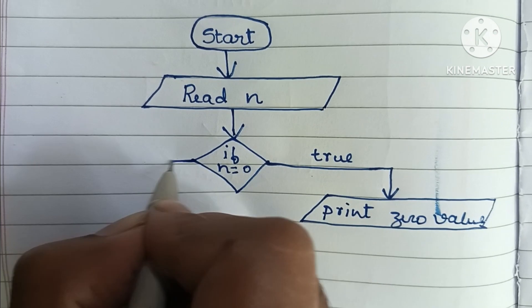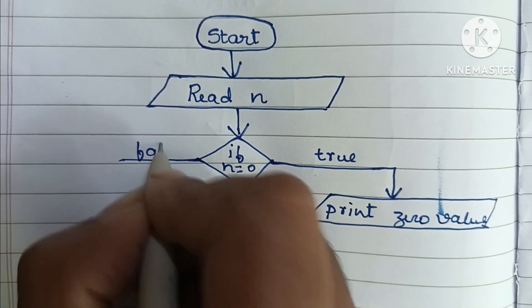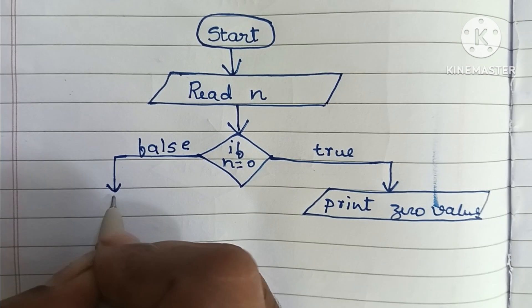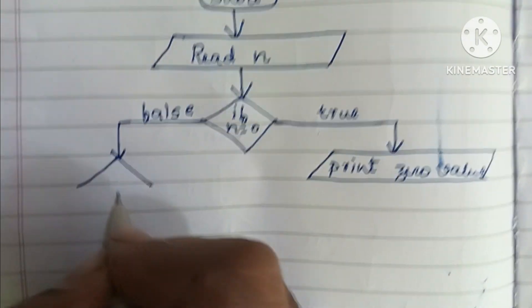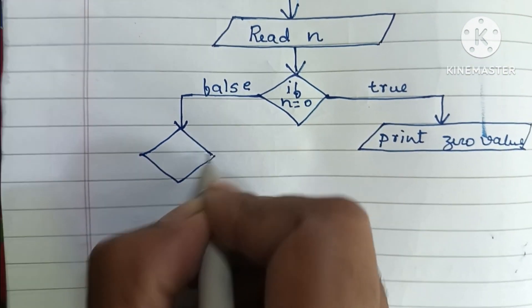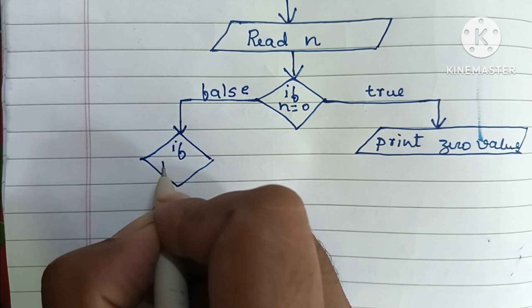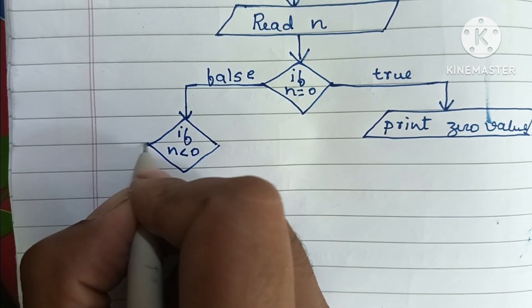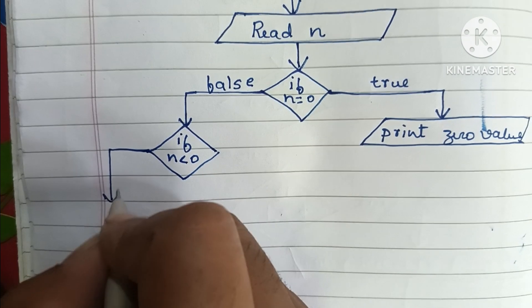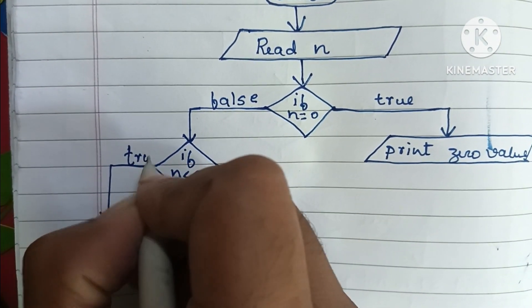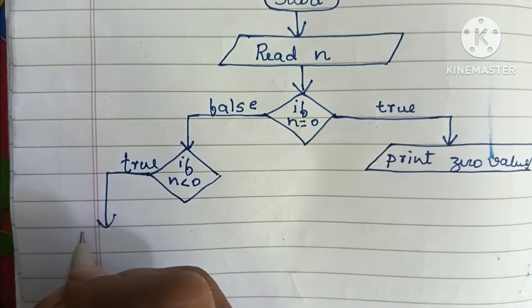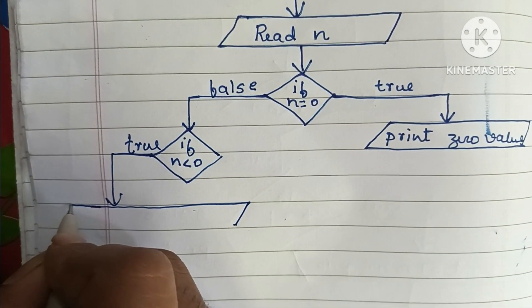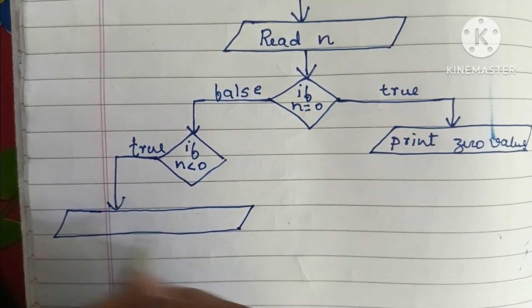If the condition N equals zero is false, we again check: if N value is less than zero. If this condition is true, we print 'negative value'.